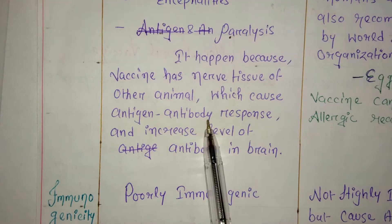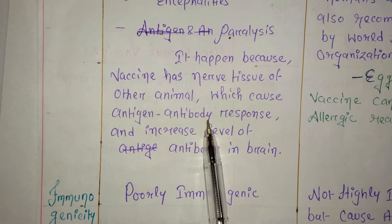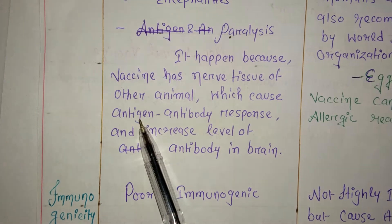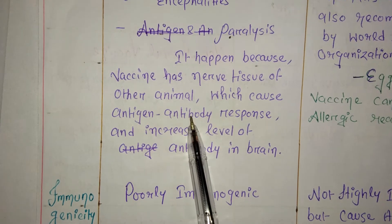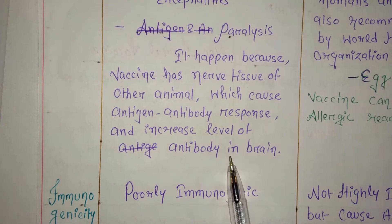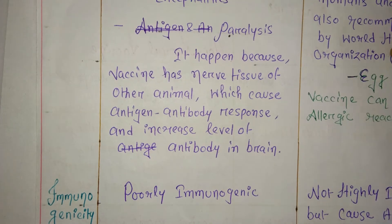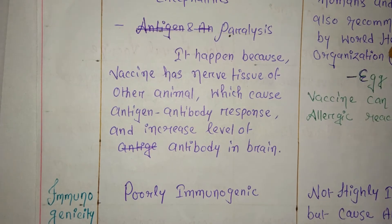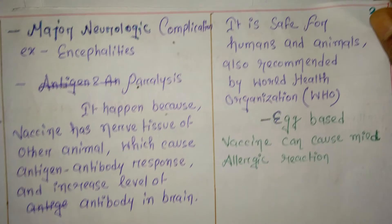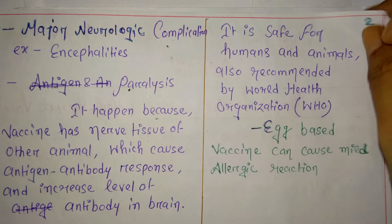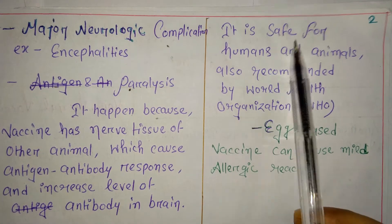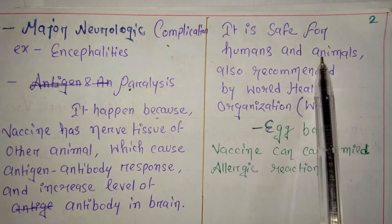This major complication happens because the vaccine already contains nerve tissue from another animal, which triggers an antigen-antibody immune response. This increases the level of antibody activity in the brain, causing major complications of the nervous system.